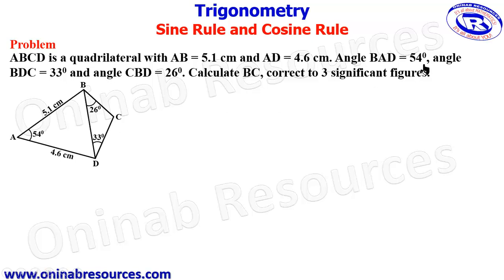Angle BAD is equal to 54 degrees, angle BDC is equal to 33 degrees, and angle CBD is equal to 26 degrees.